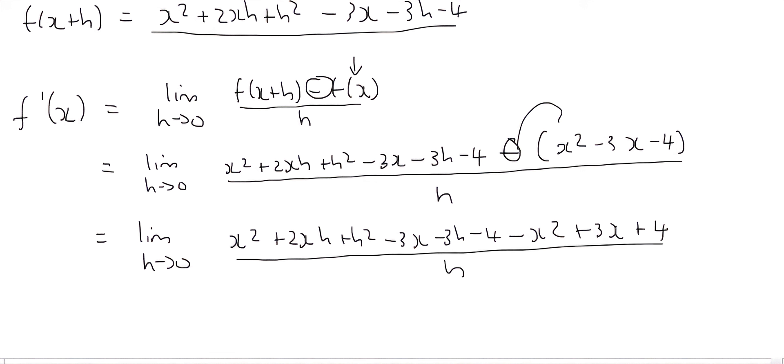And notice I keep writing equals to lim h goes to 0. They will take marks away if you forget that. So have a look here. This minus 3x and this 3x cancel. This minus 4 and this plus 4 cancel. And this x squared and this minus x squared cancel.